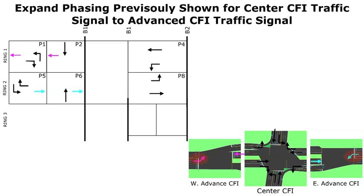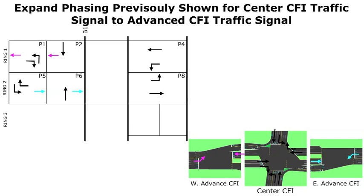I'm adding phases 9, 10, and 11, along with another barrier. With phase 11, I'm going to add the non-CFI through movements — the northbound and southbound movement — and those advanced CFI phases discussed earlier. This allows the through movements on the non-CFI approaches to operate at the same time as the advanced left turn movements. The timing for phase 11 will be based on the travel time to go from one spot to the next and how we calculated the advanced distance.